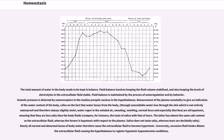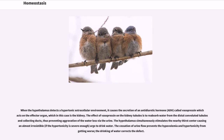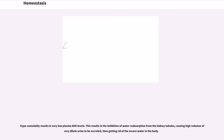Conversely, excessive fluid intake dilutes the extracellular fluid, causing the hypothalamus to register hypotonic hyponatremia conditions. When the hypothalamus detects a hypertonic extracellular environment, it causes the secretion of antidiuretic hormone (ADH), called vasopressin, which acts on the effector organ — in this case the kidney. The effect of vasopressin on the kidney tubules is to reabsorb water from the distal convoluted tubules and collecting ducts, thus preventing aggravation of the water loss via the urine. The hypothalamus simultaneously stimulates the nearby thirst center, causing an almost irresistible urge to drink water if the hypertonicity is severe enough. Hypoosmolality results in very low plasma ADH levels, causing inhibition of water reabsorption from the kidney tubules and high volumes of very dilute urine to be excreted, thus getting rid of the excess water in the body.